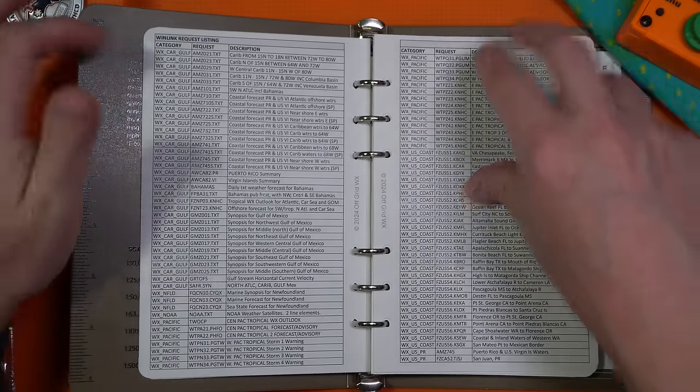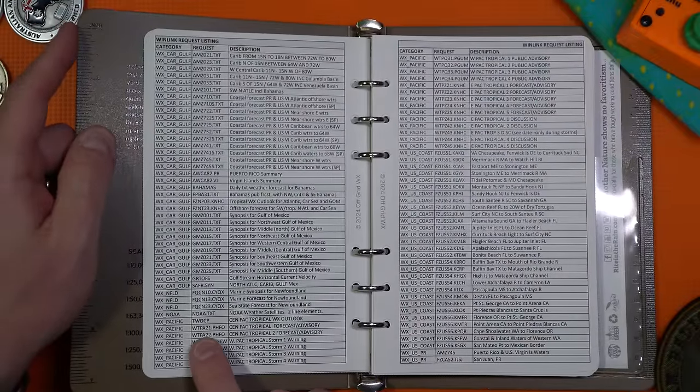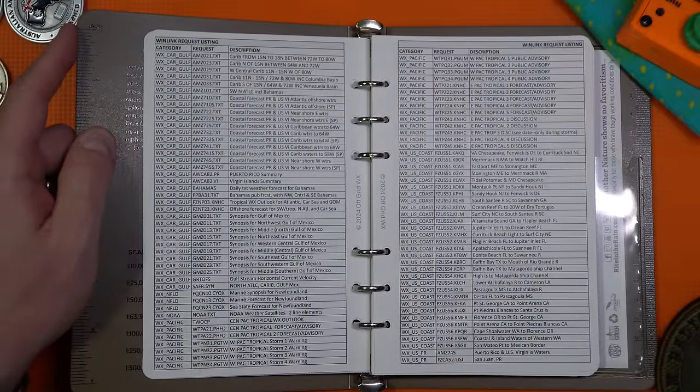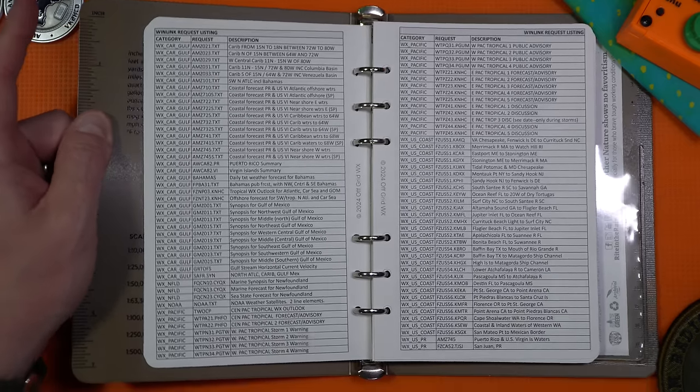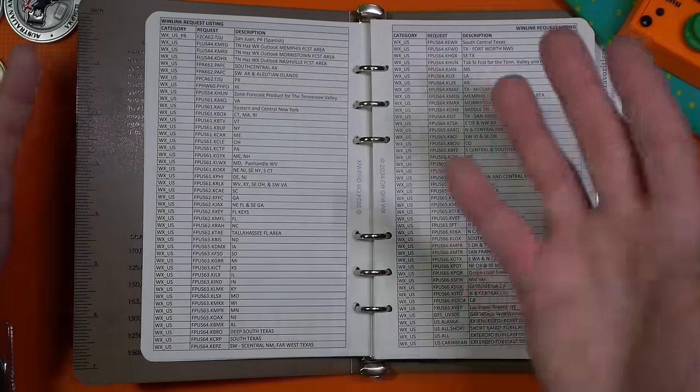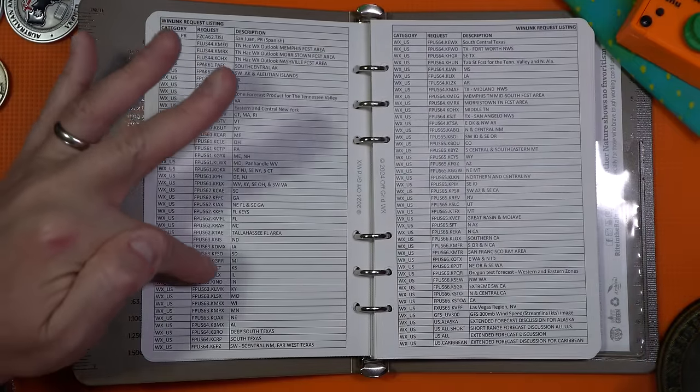These are all things that you can send by adding this request. So if we added WTPA21.PHFO, we'd get the Central Pacific Tropical Forecast and Advisory Notification. That's awesome. Like I said, a lot of this I didn't even know about.